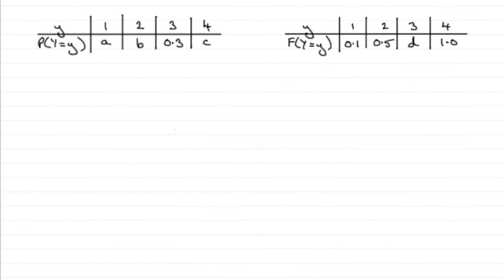Okay, so in this question we're given the probability distribution for Y and the cumulative distribution of Y is given by this capital F. We've got to find out what a, b, c, and d are.